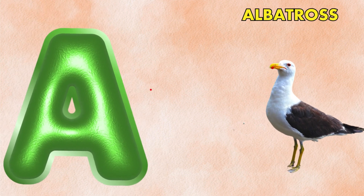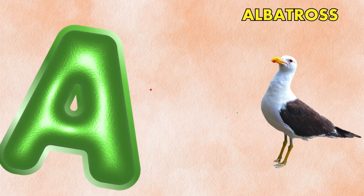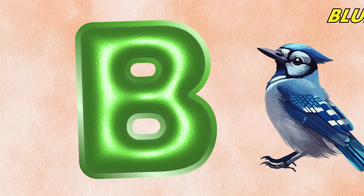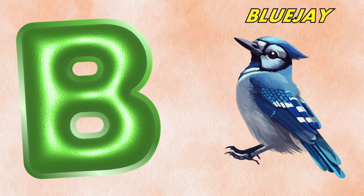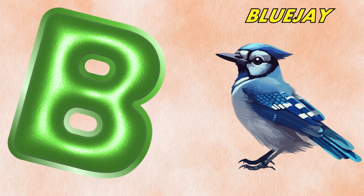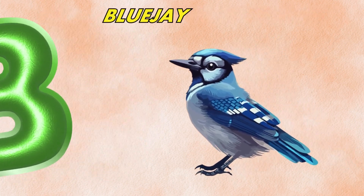A is for albatross, ah, albatross. B is for blue jay, buh, blue jay.